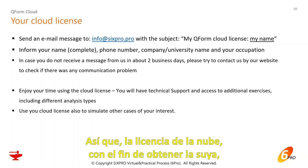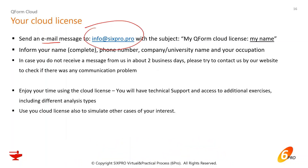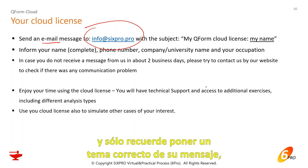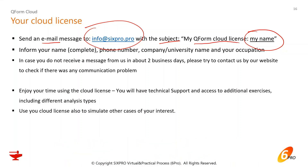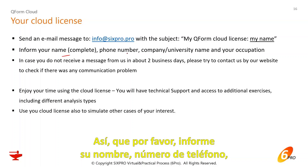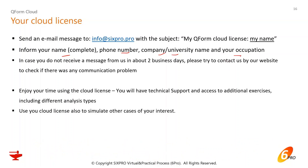To get your cloud license, send an email to info@sixrob.pro with the subject 'My Keyform Cloud License' and your name. Please inform your name, phone number, company or university if applicable, and your occupation — whether you're a student, engineering manager, or whatever you do. If you don't receive a message from us with the software within about two business days, please contact us through our website in case there was a communication problem.